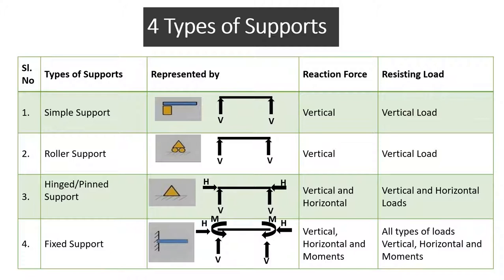Next is roller support. This is also similar to simple support — there is only one reaction force, that is in the vertical direction, so it can resist only vertical load. It is free to rotate and it can move in the horizontal direction; it cannot resist horizontal load and moment. The difference between simple support and roller support is that in roller support the rolling friction is neglected.